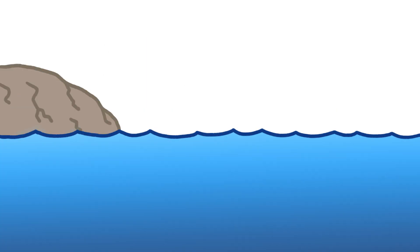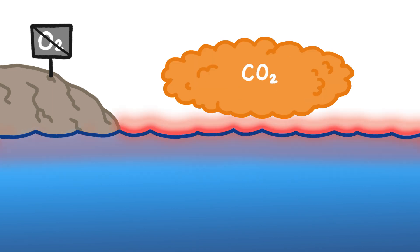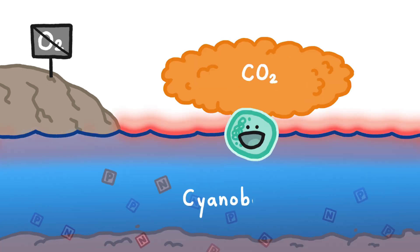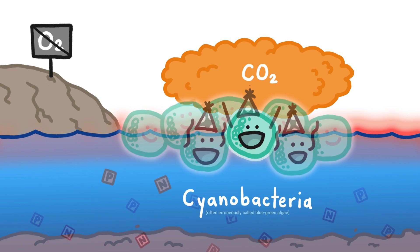Three billion years ago, the land was lifeless, and the air oxygen-free but rich in CO2. The oceans were hot and loaded with nitrogen and phosphorus, and aquatic microbes called cyanobacteria were loving it.